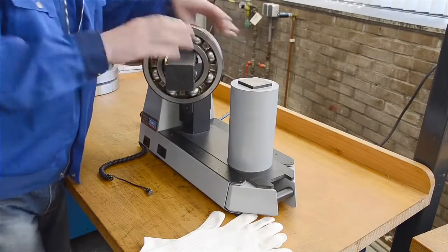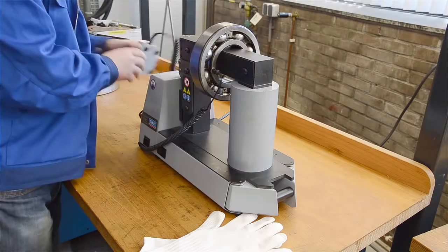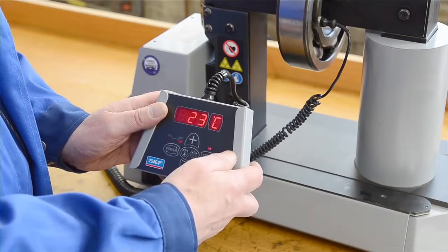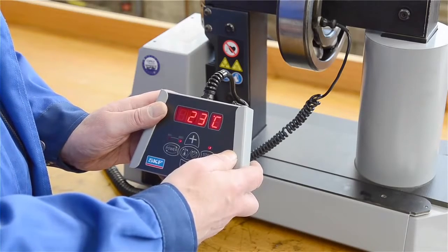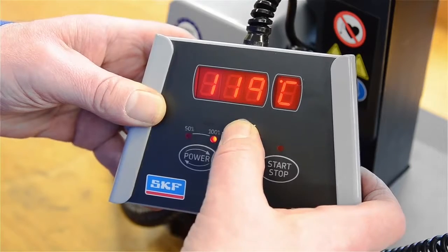Place the bearing on the heater and then place the temperature probe on the bearing inner ring. Press the start button on the remote control and the bearing starts heating. The preset temperature is 110 degrees Celsius, but you can also choose the temperature you want.